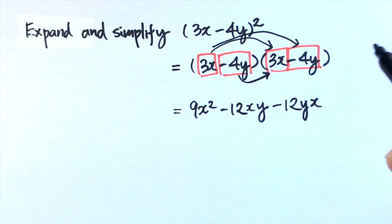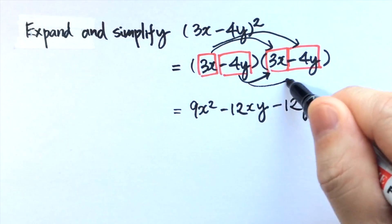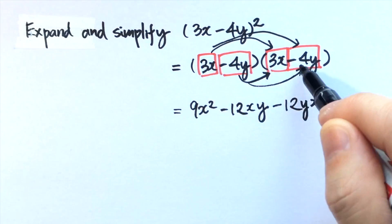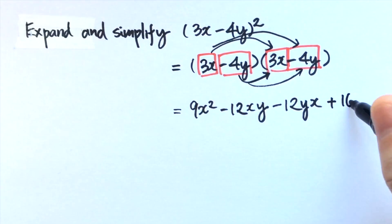Last one: negative 4y times negative 4y equals plus 16y squared.